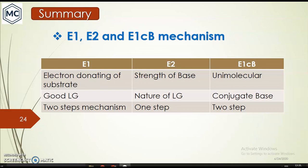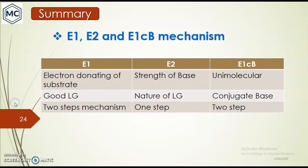In summary, E1 elimination occurs best with substrates having electron-donating groups — for example tertiary substrates — with a good leaving group, in a two-step mechanism where the rate depends only on the substrate. E1cb is also a unimolecular two-step process where cb stands for conjugate base — deprotonation precedes leaving group departure. That is all about today's topic. Thank you for watching.